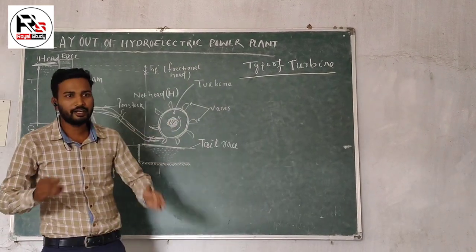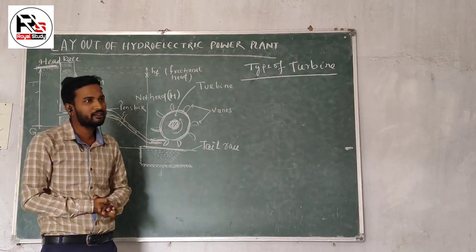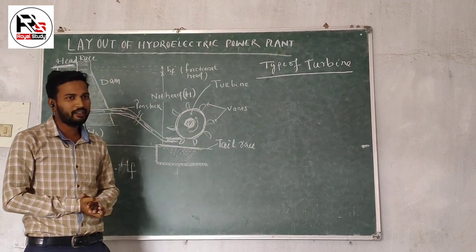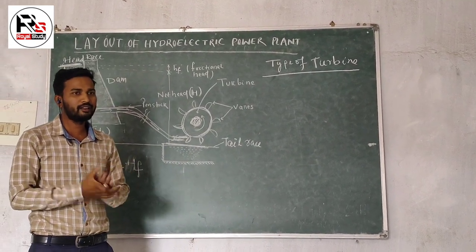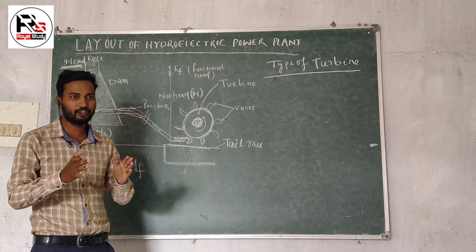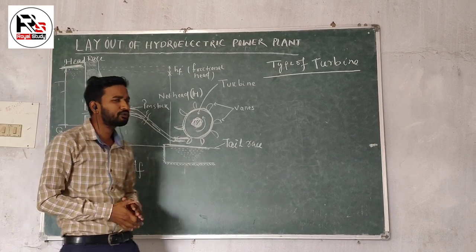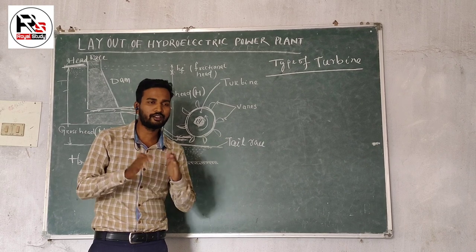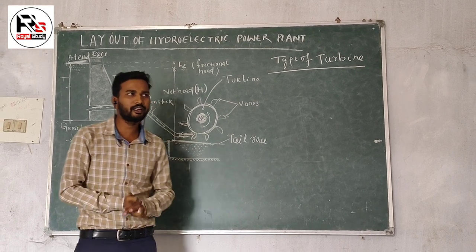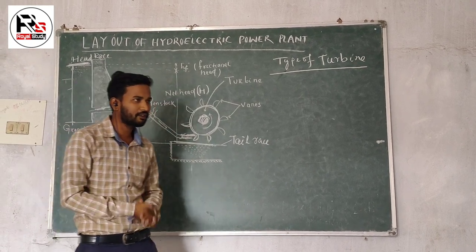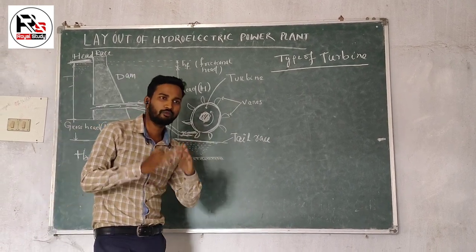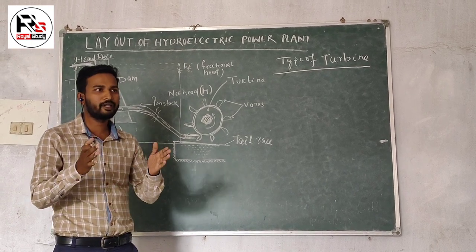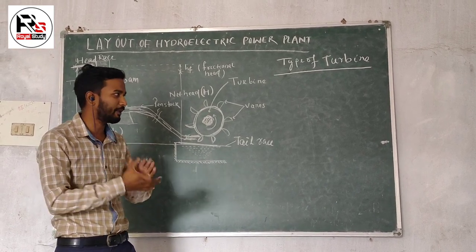According to the head of the turbine, there are three types: high head turbine, medium head turbine, and low head turbine. And according to the direction of flow through the turbine, there are also different types: tangential flow turbine, radial flow turbine, axial flow turbine, and mixed flow turbine.